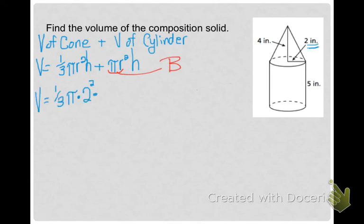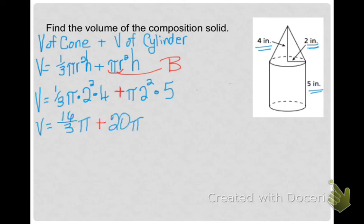So, I've got one-third pi times 2 squared times the height of my cone, plus pi times 2 squared times the height of my cylinder, which is 5. And again, I can answer in terms of pi by taking all of my numbers and multiplying them together. So, I get 16 thirds pi plus 20 pi, and if I added those two together, combining like terms, I'd get 25 and one-third pi if I wanted to answer in terms of pi.